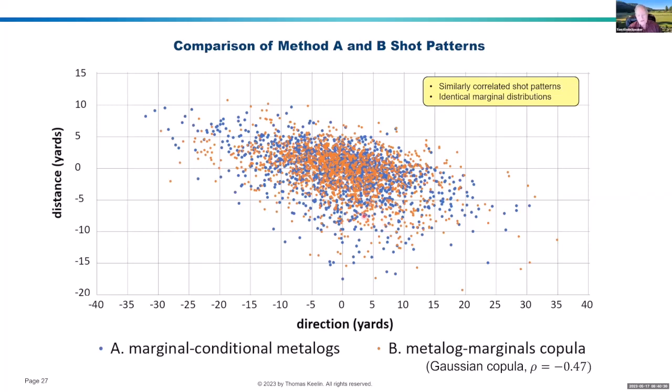And the copula, by the way, is guaranteed to honor the exact marginal distributions, including this short, long skewness that we've discussed.